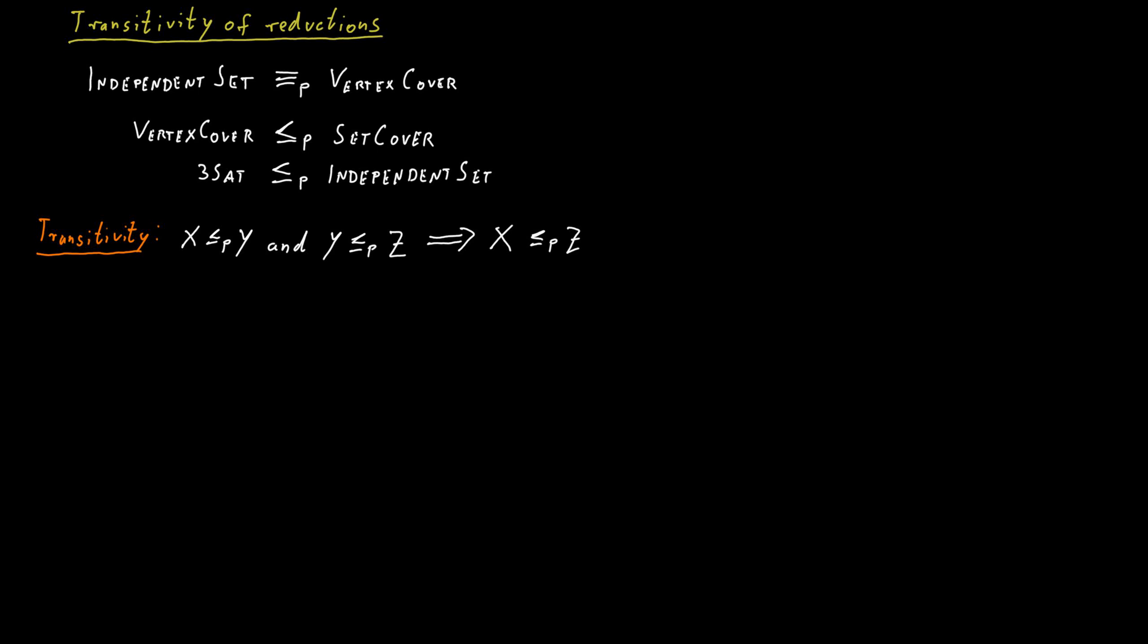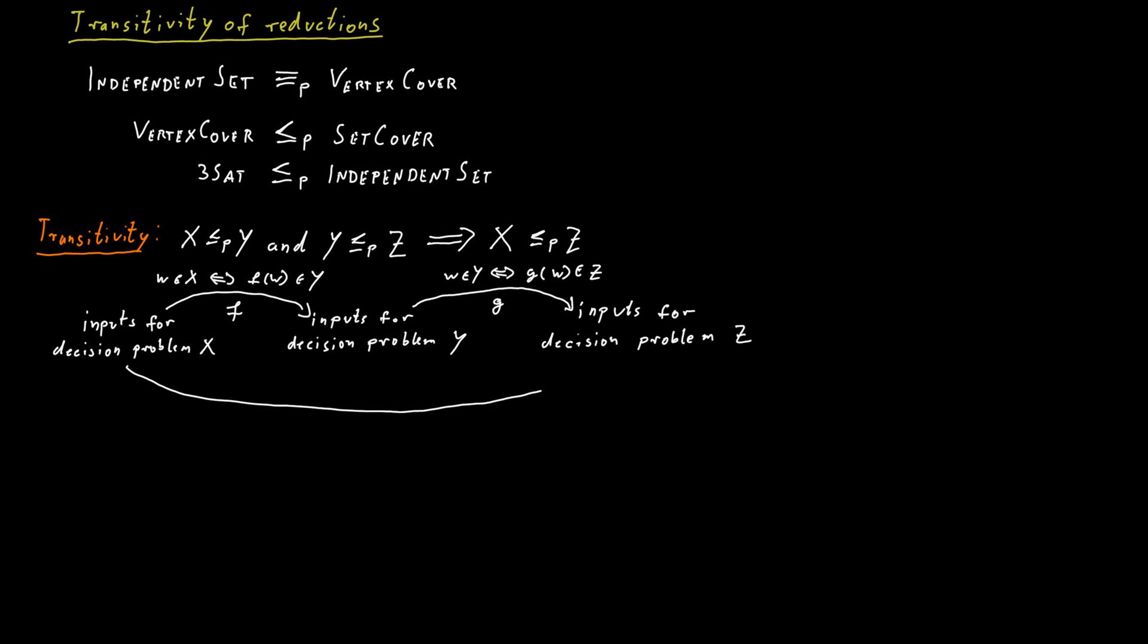The idea behind proving this transitivity is that we can simply compose the two algorithms for the two reductions. We have a reduction from X to Y, which means we have a function that we can compute in polynomial time that transforms inputs for problem X into inputs for problem Y. We have a different function that we can compute in polynomial time that transforms inputs for problem Y into inputs for problem Z. We now can just combine these two functions.